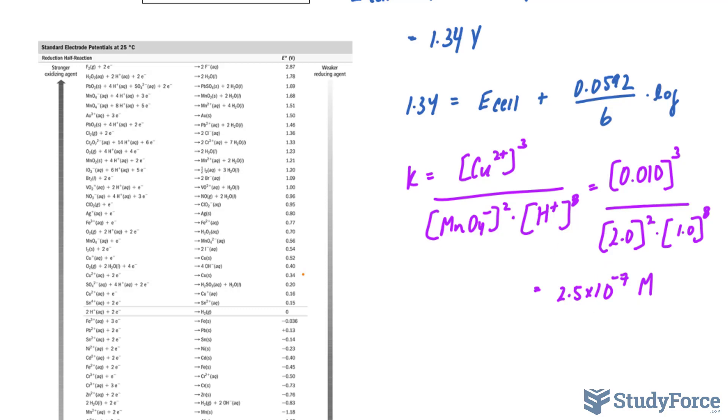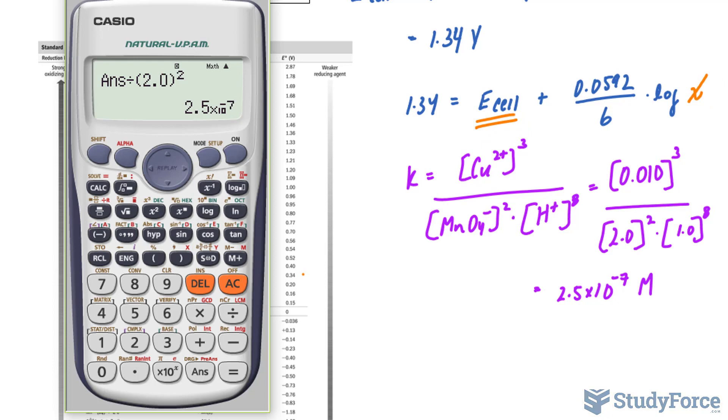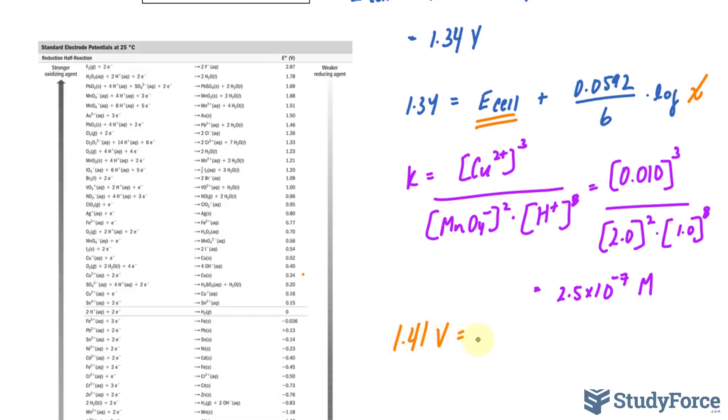I'll substitute this value right into here. And we'll solve for E_cell. I'll take log of the number that's on my screen, multiply that to 0.0592 divided by 6, and then move that over to the left side. So, 1.34 minus whatever it was, and we get 1.405. We need this to three significant figures, so two numbers after the decimal place, 1.41 is the answer. 1.41 volts is the calculation for E_cell.